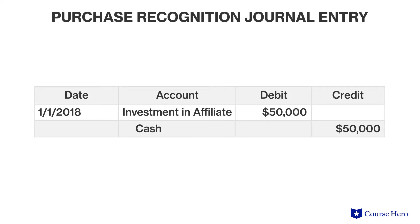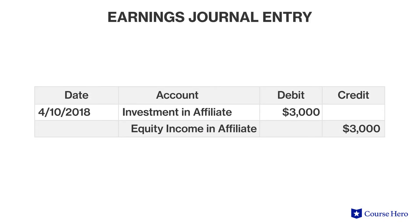For example, Ace Company buys 30% of Bay Company's common stock for $50,000 on January 1, 2018. This ownership percentage meets the threshold for the equity method. Ace Company first makes a journal entry to record the purchase. On April 10, Bay Company declares first quarter earnings of $10,000. Under the equity method, earnings of the investee company are considered to be owned in part by the investor. Thus, Ace Company would recognize its share — 30% of the income in the affiliate, or $3,000.